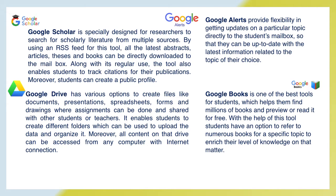Google Scholar is specially designed for researchers to search for scholarly literature from multiple sources. By using an RSS feed, the latest abstracts, articles, theses, and books can be directly downloaded to the mailbox. The tool also enables students to track citations for their publications, and students can create a public profile. Google Alerts provide flexibility in getting updates on a particular topic directly to the student's mailbox, keeping them up to date with the latest information related to their chosen topic.